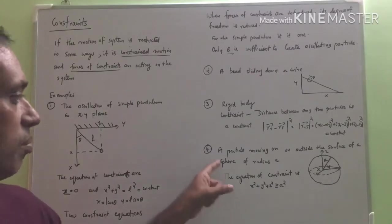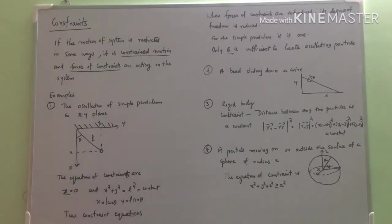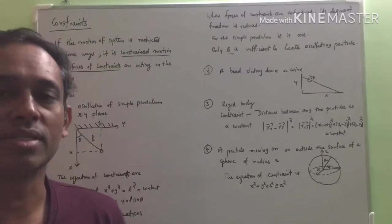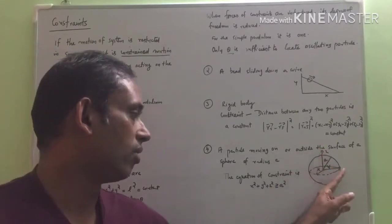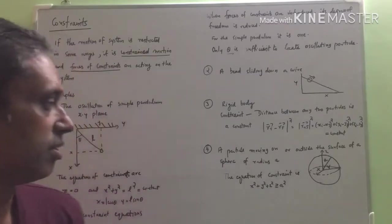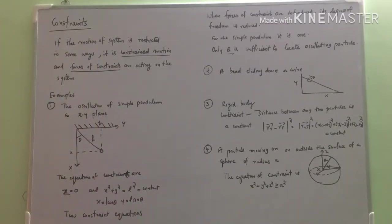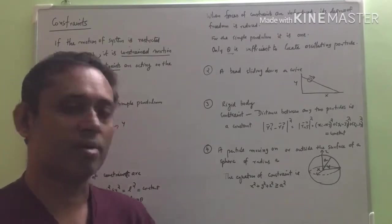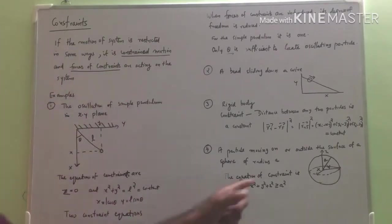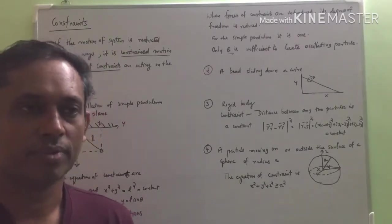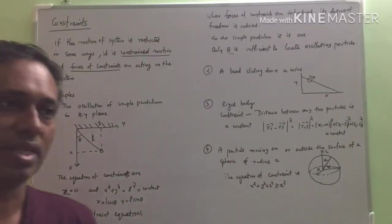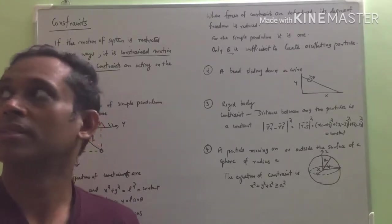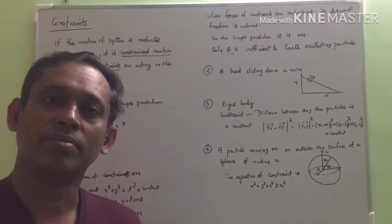Another example is a particle moving on or outside the surface of a sphere of radius a. We have a sphere of radius a, and a particle is constrained to move either on the surface or outside the surface. The constraint is represented by the equation x squared plus y squared plus z squared greater than or equal to a squared. These are some examples of constraints acting on systems. In general, as constraints act, the degrees of freedom are reduced.